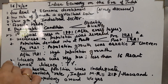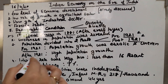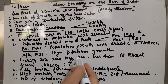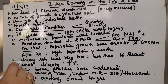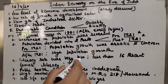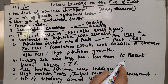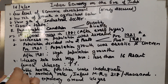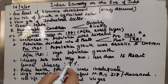Now coming to the qualitative indicators of population — let us evaluate the quality of population. The literacy rate was very low; less than 16 percent literacy rate existed at that time. Female literacy was even lesser, at only seven percent.